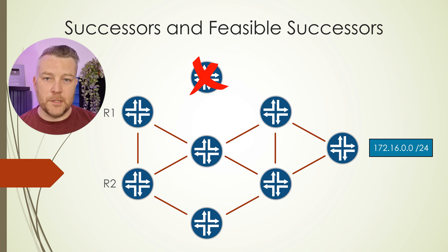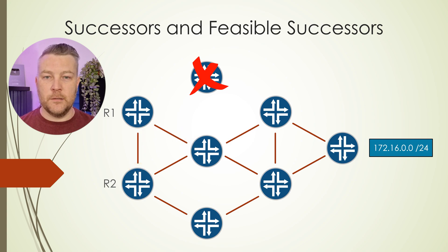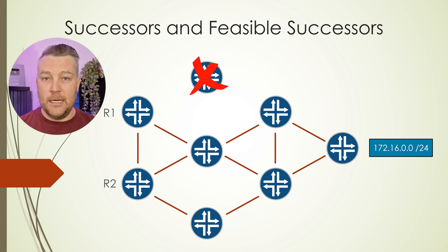So what happens if there is no feasible successor at this time? Well, this is when we see a route go active. When a path to a route has failed and there is no feasible successor ready to take over, the router will respond by sending out a query message to all of its neighbors. This query message contains the prefix and a delay which is set to infinite.